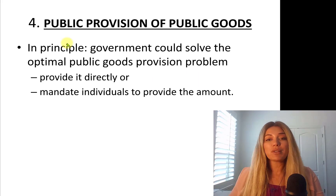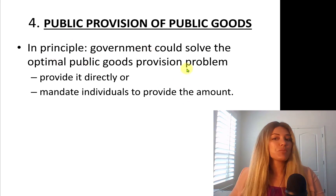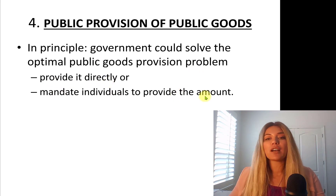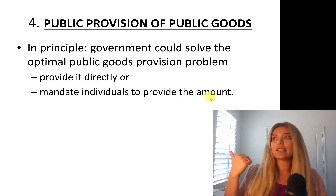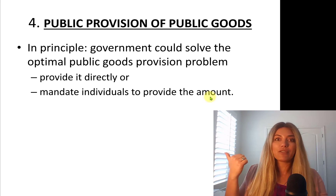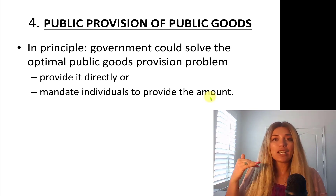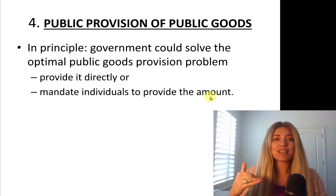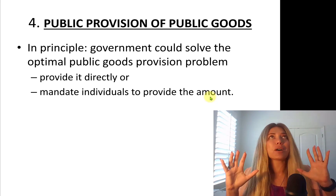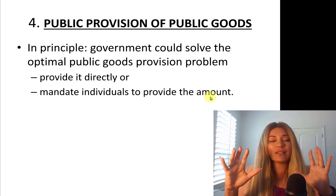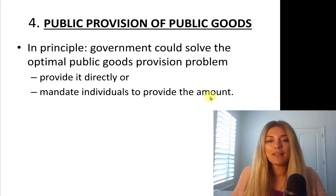In principle, government could solve the optimal public goods provision problem. It can provide the good directly or mandate individuals to provide the required amount. For example, government could collect trash every Friday, or it could mandate that residents take their trash to a public incinerator at some location every week.